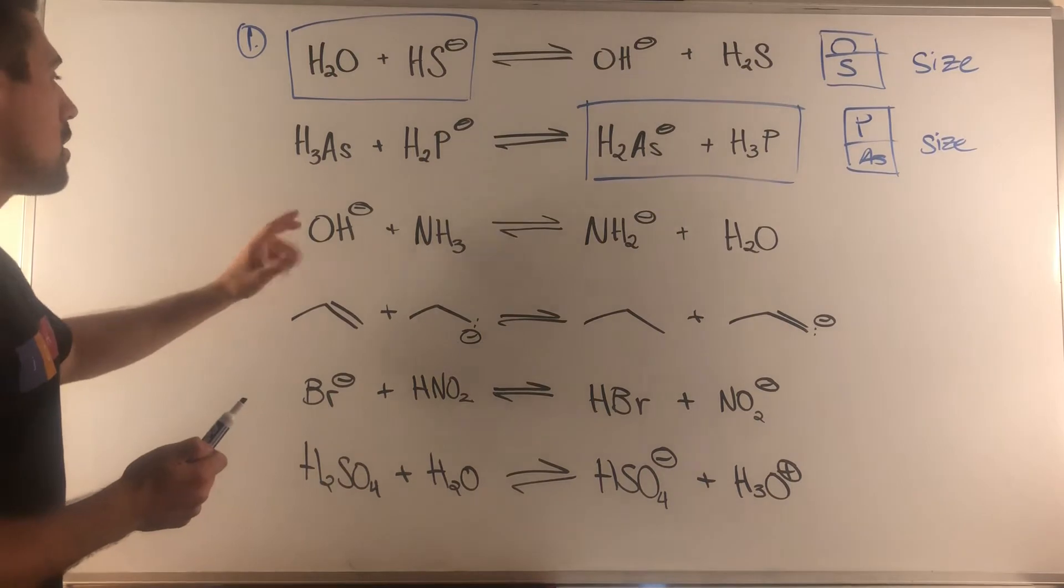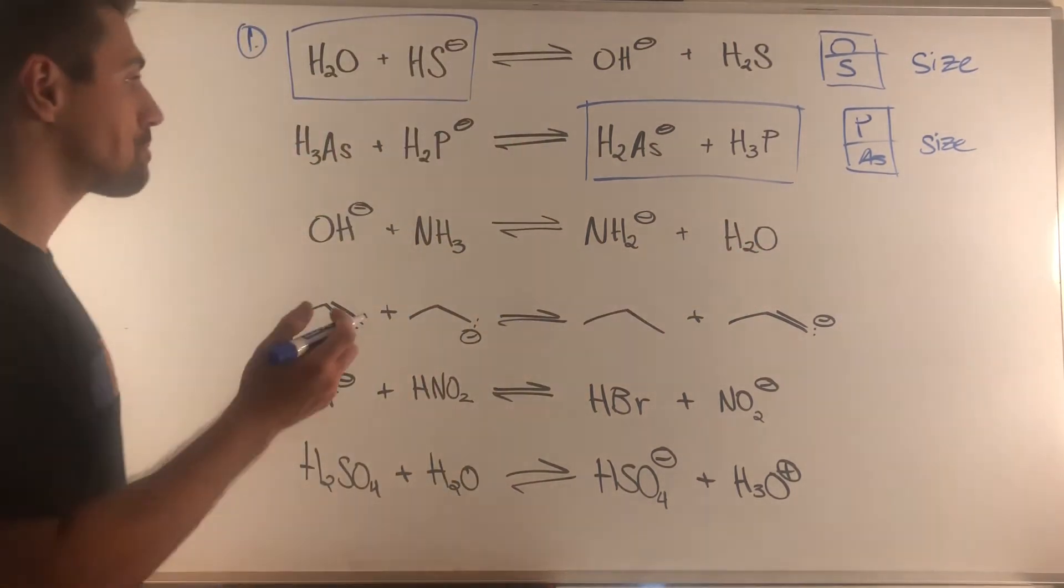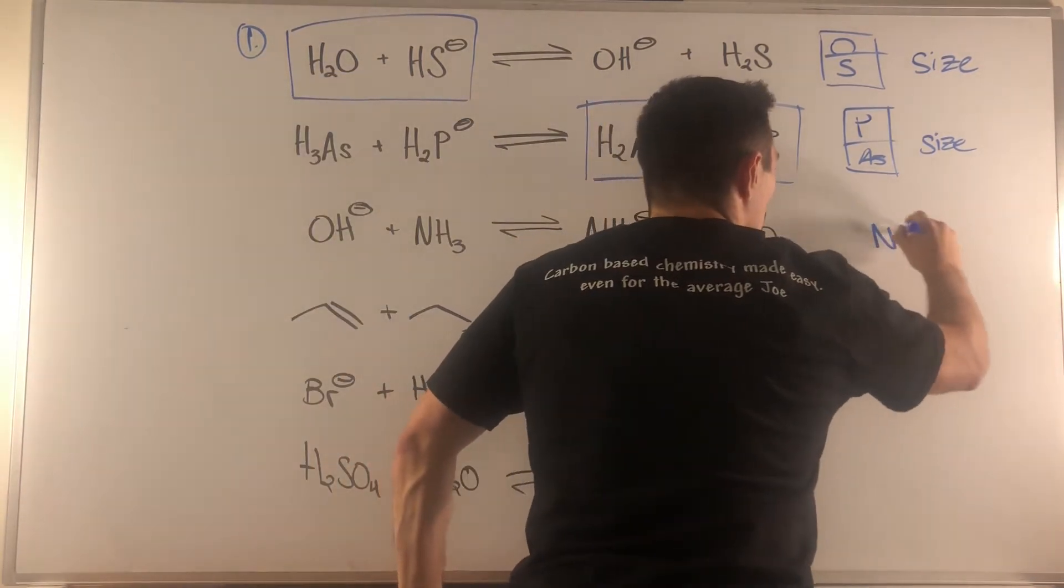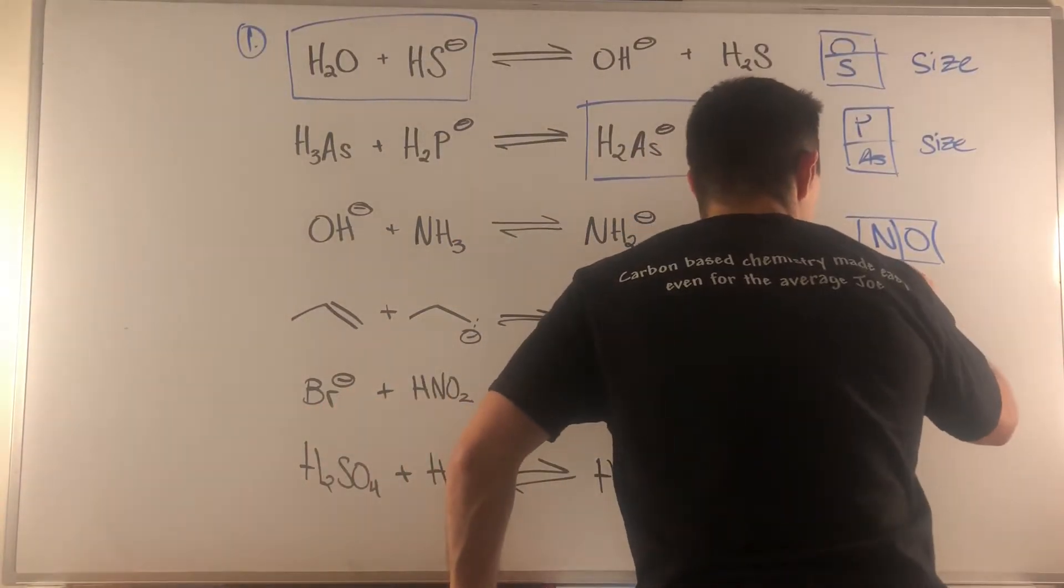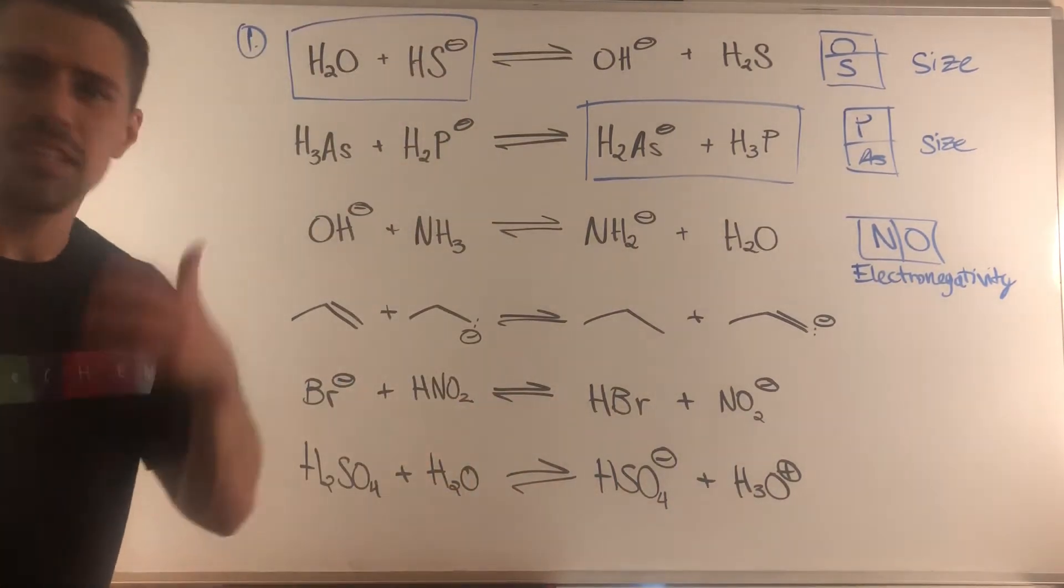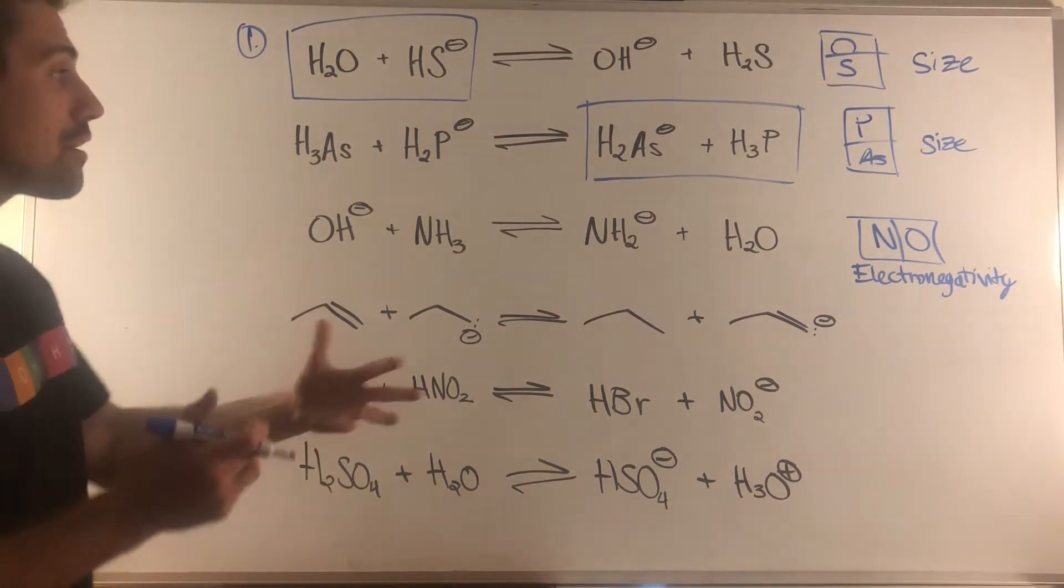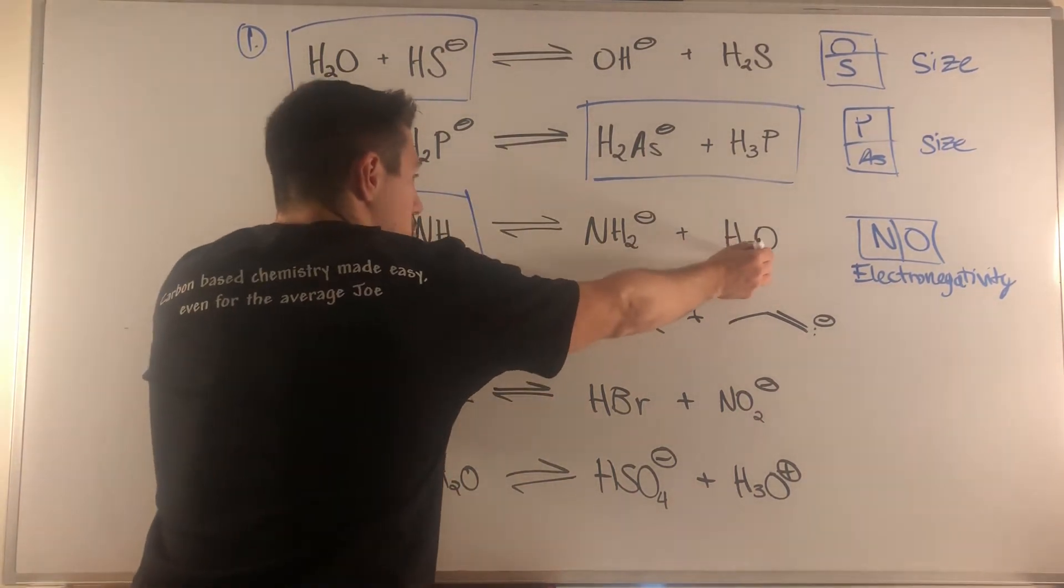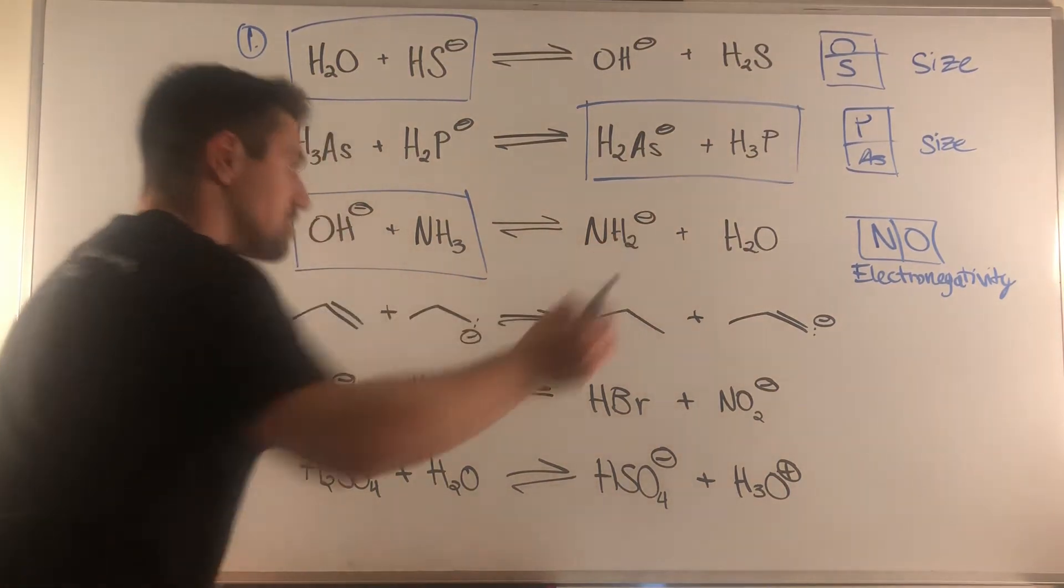So now moving right along, we have hydroxide, ammonia on this side of the equilibrium going to NH2 minus and water. What's the relationship between the two atoms bearing the negative charge, oxygen and nitrogen? They're in the same row. When you have the same row as opposed to the same column, what you have going on is electronegativity. The more electronegative atom handles electrons better. Oxygen handles more excess electrons better than nitrogen. This side of the equilibrium is favored. This acid is stronger than this acid. Hydroxide is a weaker, more stable conjugate base than NH2 minus.